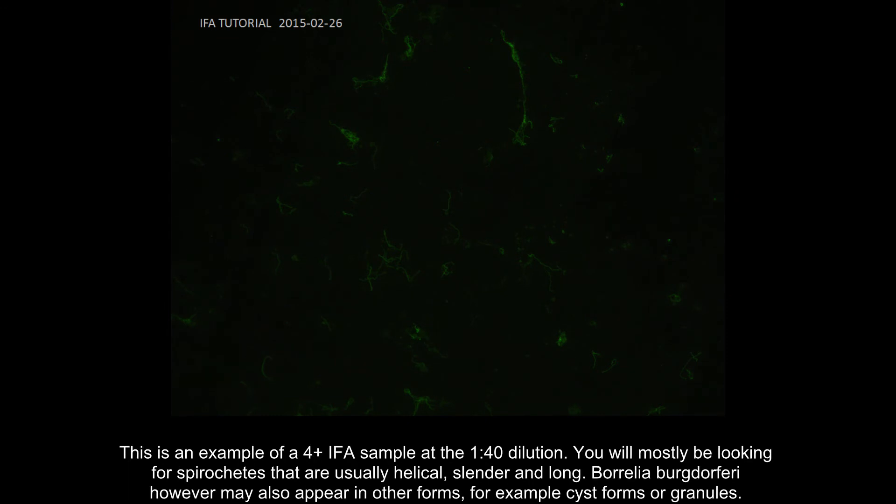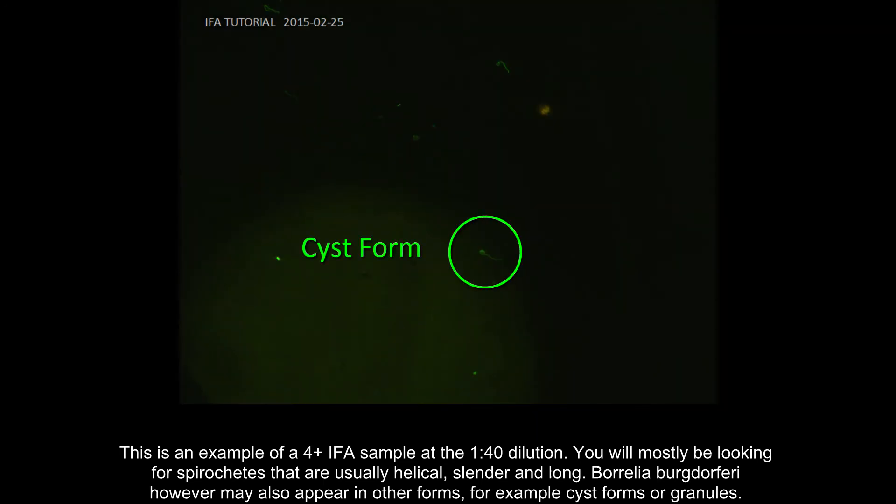This is an example of a 4-plus IFA sample at the 1-40 dilution. You will mostly be looking for spirochetes that are usually helical, slender, and long. Borrelia burgdorferi, however, may also appear in other forms, for example, cyst forms or granules.